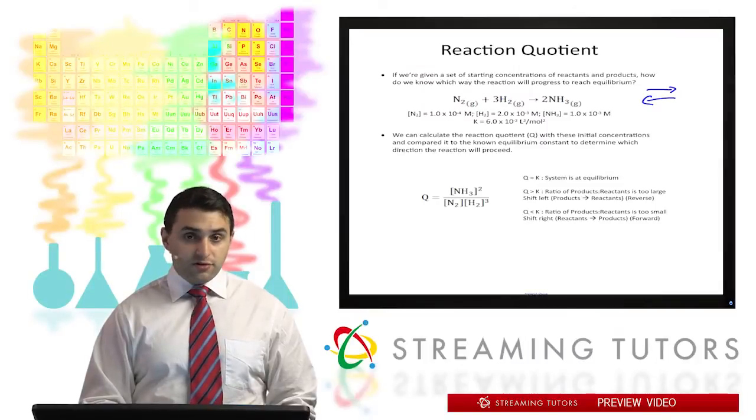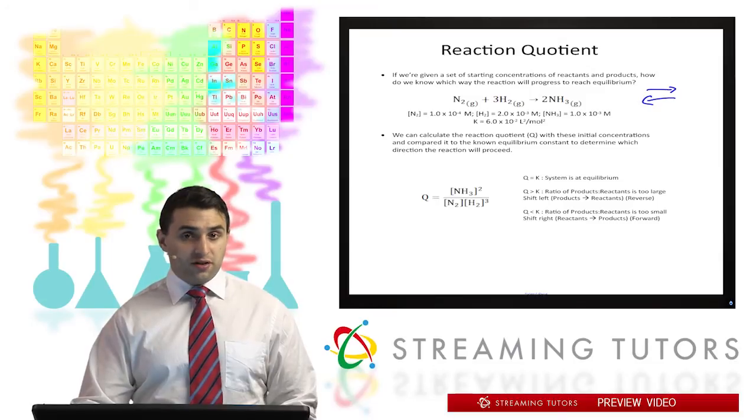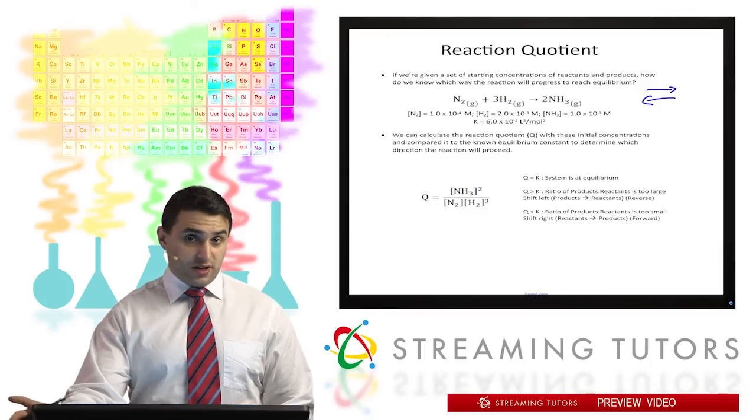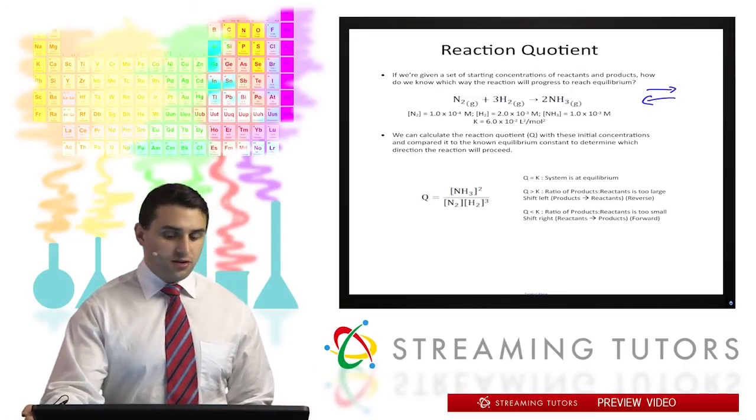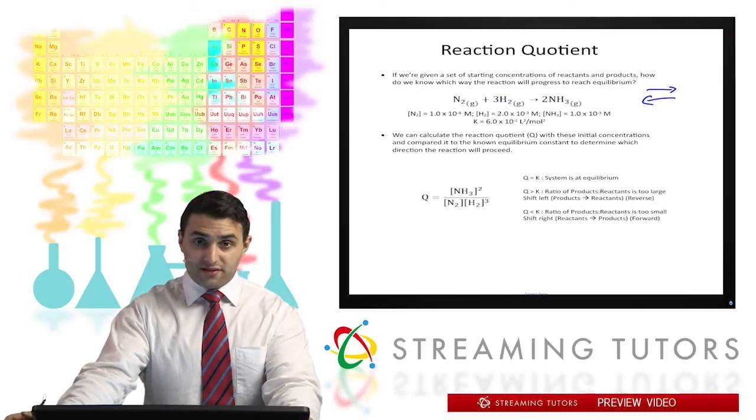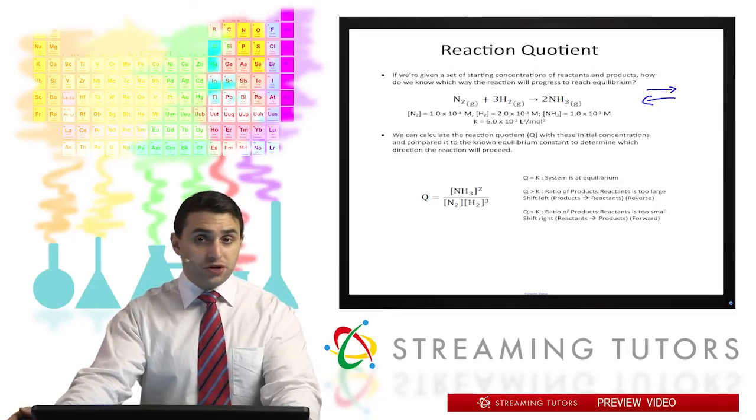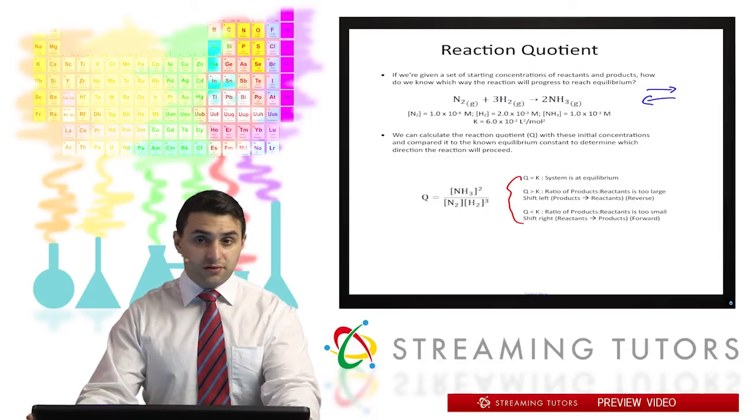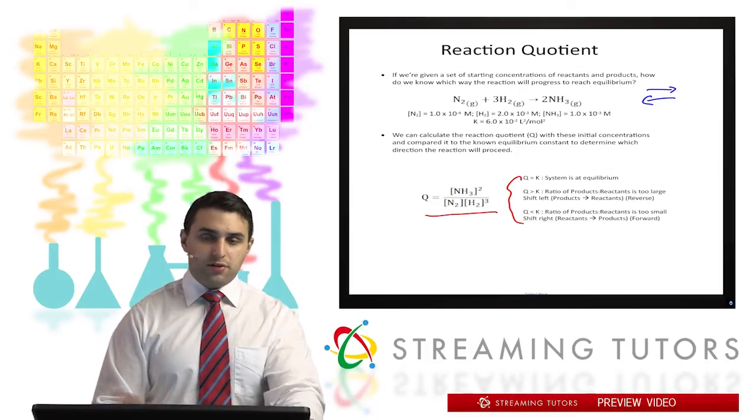So there's three different scenarios that can happen. We can have Q equals K, that means the system is at equilibrium. We can also have Q greater than K, so what that would mean is that the ratio of products to reactants is too large. And so we'd have to shift to the left and form more reactants from products. On the other hand, if Q is less than K, we have a ratio of products to reactants that's too small. And so we'd need to convert from reactants to products in the forward direction. These three scenarios are going to be very important for you to remember, so definitely keep them in mind. And you could see them even from the mathematics of the Q equation here.